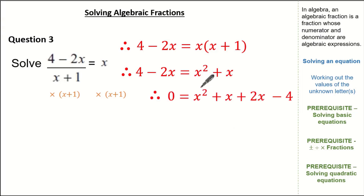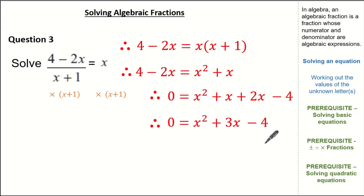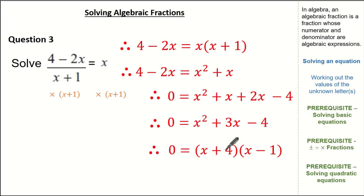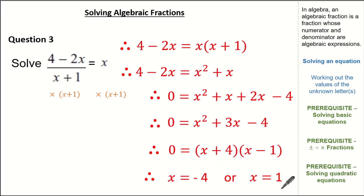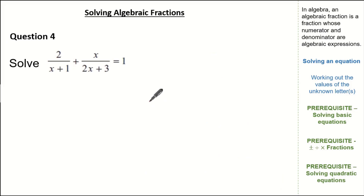Let's move all our terms to one side so our quadratic equals 0. Collecting all terms gives us x squared plus 3x minus 4. Using our knowledge on solving quadratic equations, we can factorize: we need two numbers that multiply to give minus 4 but sum to give 3. Factorizing gives us (x plus 4)(x minus 1) equals 0, so the solutions are x equals minus 4 or x equals 1.